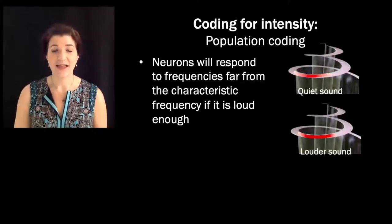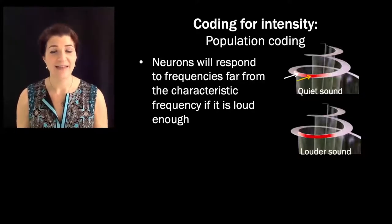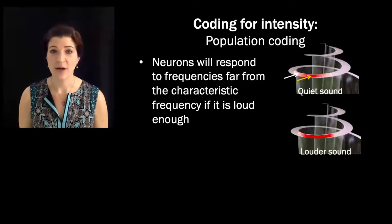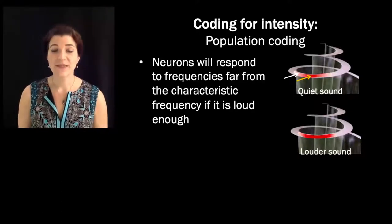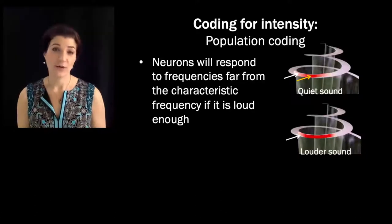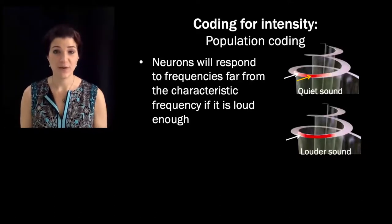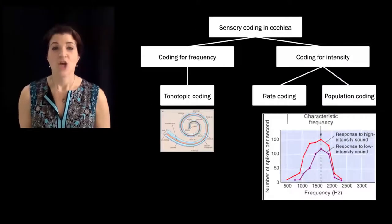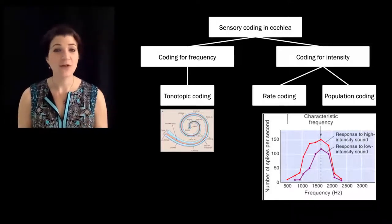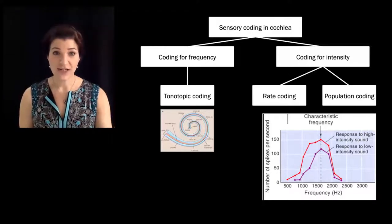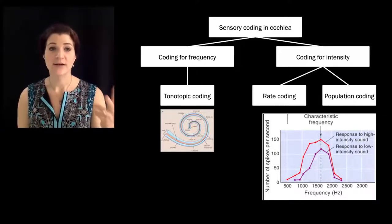This means neurons will respond to frequencies far from their characteristic frequency if a sound is loud enough. For example, if a neuron's characteristic frequency is 2,000 hertz and a 3,000 hertz tone is played quietly, that region of the basilar membrane won't be heavily moved. But if that 3,000 hertz tone is really loud, the hair cell with a characteristic frequency of 2,000 hertz will respond because that region of the basilar membrane will move. So: which neurons are firing is tonotopic coding, how fast they're firing is rate coding, and how many are firing at once is population coding.